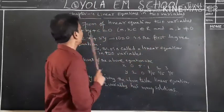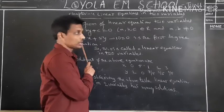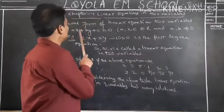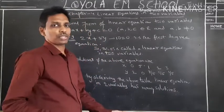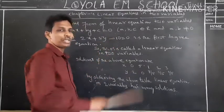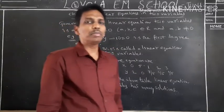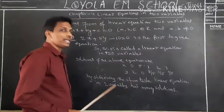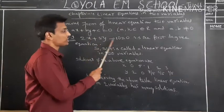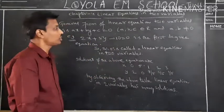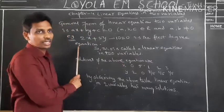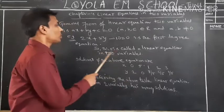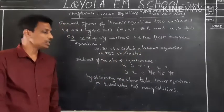Let us see what will happen if a equals zero or b equals zero. If both a and b are equal to zero, these two terms will be absent and we get simply c = 0, which won't be in the form of a linear equation in two variables. For example, 2x + 5y − 10 = 0 is a first-degree equation because the power is 1, so this is called a linear equation in two variables.